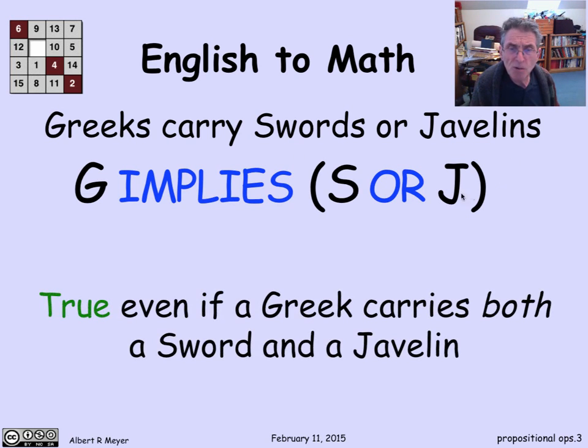The problem is, what does or mean? It turns out that for javelins and swords, it's true even if a Greek carries both a sword and a javelin. This is an inclusive or. A Greek soldier would carry both a sword and a javelin because a javelin is a good long distance weapon, and a sword is good for defending yourself close in. You certainly want to have both, especially after you've thrown your javelin and you don't have anything left but the sword.